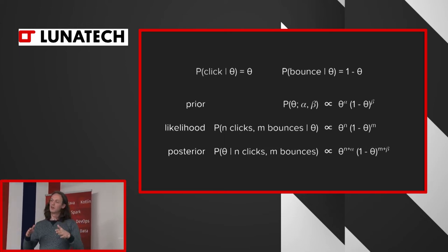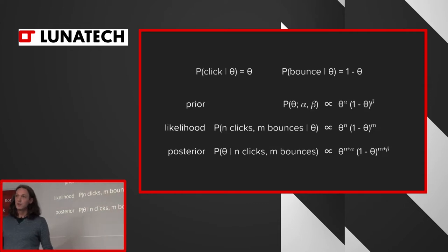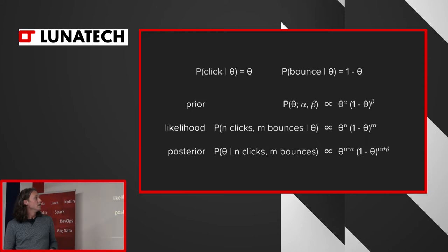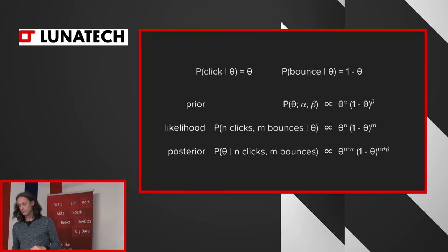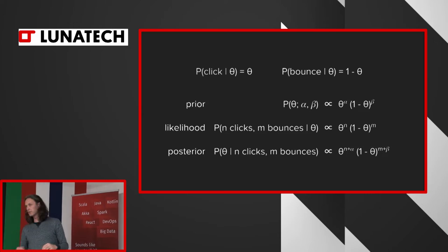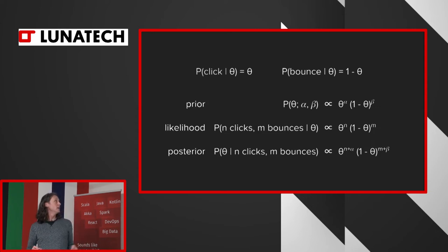And yeah, here the N and M are the clicks and the bounces. So you can see that the powers are increasing and that basically the distribution is getting narrower and narrower. And you can see that there's a nice interplay between the prior, so the things you assume upfront without seeing any data, and the way the data updates your beliefs.